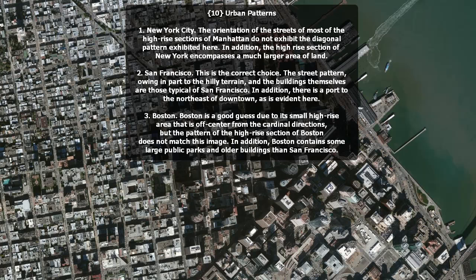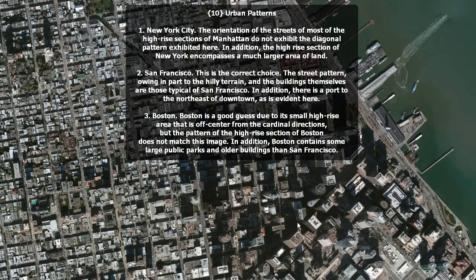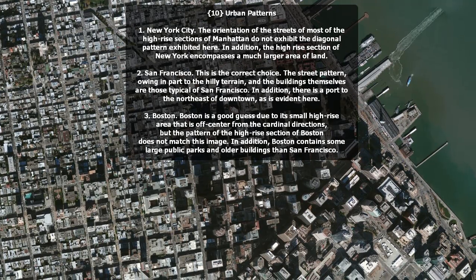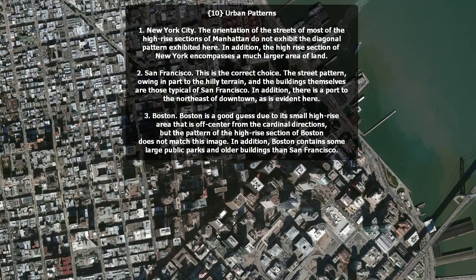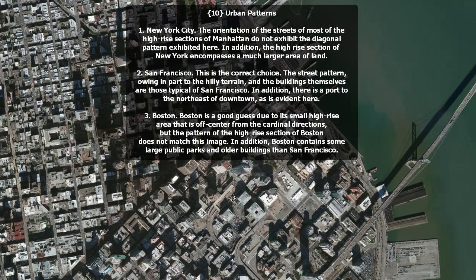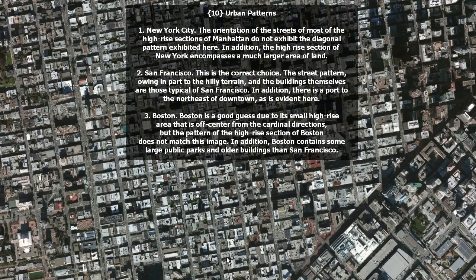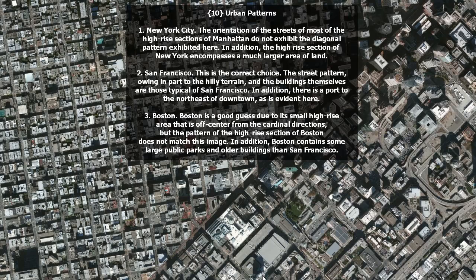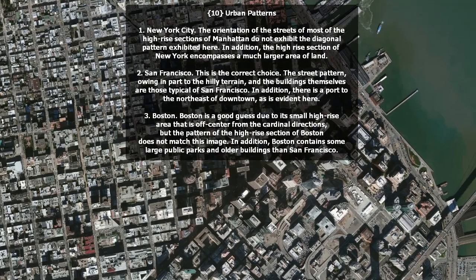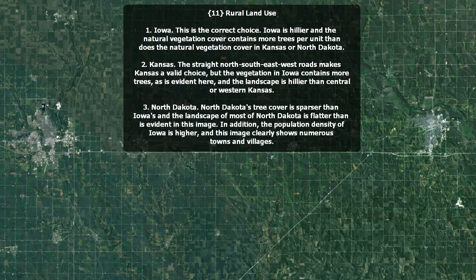Urban patterns. This is San Francisco. The street pattern owing in part to the hilly terrain and the buildings themselves are more typical of San Francisco. In addition, there is a port to the northeast of downtown as is evident here. Boston's a good guess due to its small high-rise area that is off-center from the cardinal directions, but the pattern of the high-rise section of Boston does not match this image. In addition, Boston contains some large public parks and older buildings than San Francisco. New York City — the orientation is wrong and you don't have this sort of diagonal pattern in New York City. Also, the high-rise section of New York encompasses a much larger section of land than San Francisco.